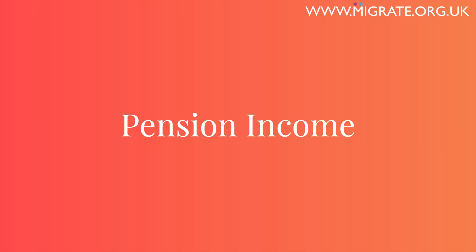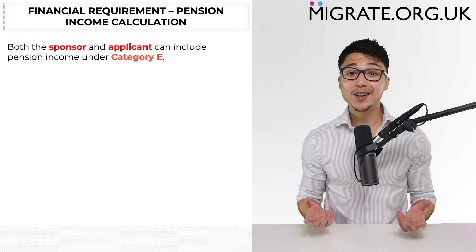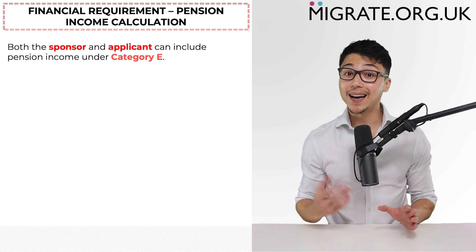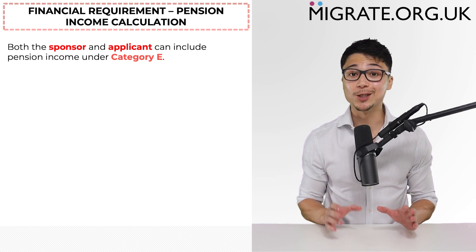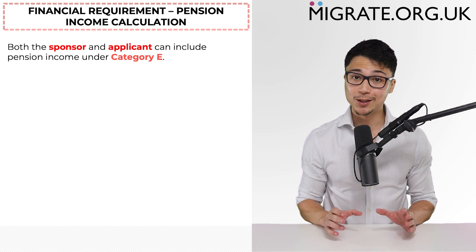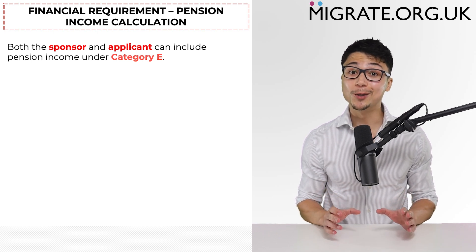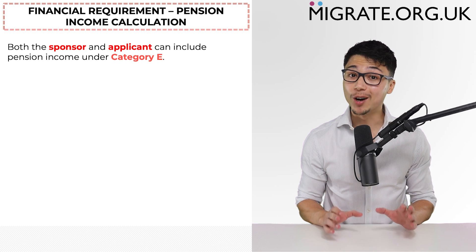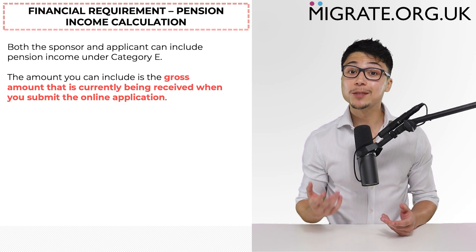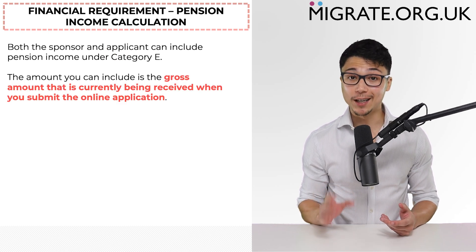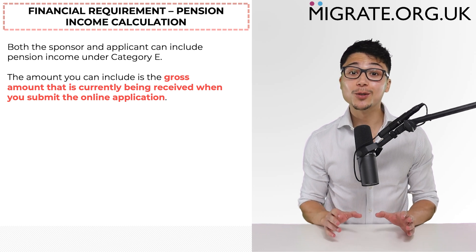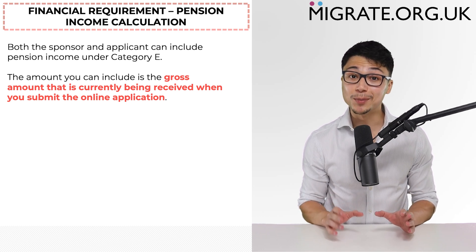Let's now discuss pension income, which is included under category E. The first thing to note is that both the sponsor and the applicant can include pension income towards the financial requirement. The calculation of the amount of pension income includable is rather simple — it is the gross amount being received when you submit the application, if the pension income has been a source of income for at least 28 days before the submission of the application. It is not the total gross pension income received in the 12 months before submitting the application.